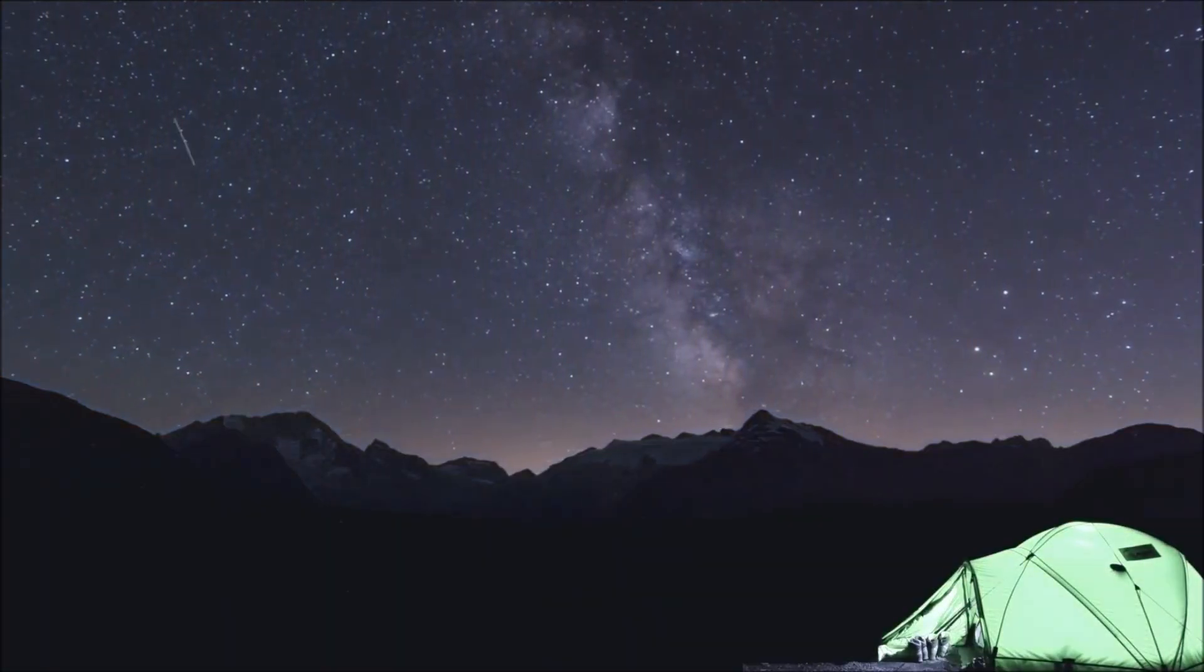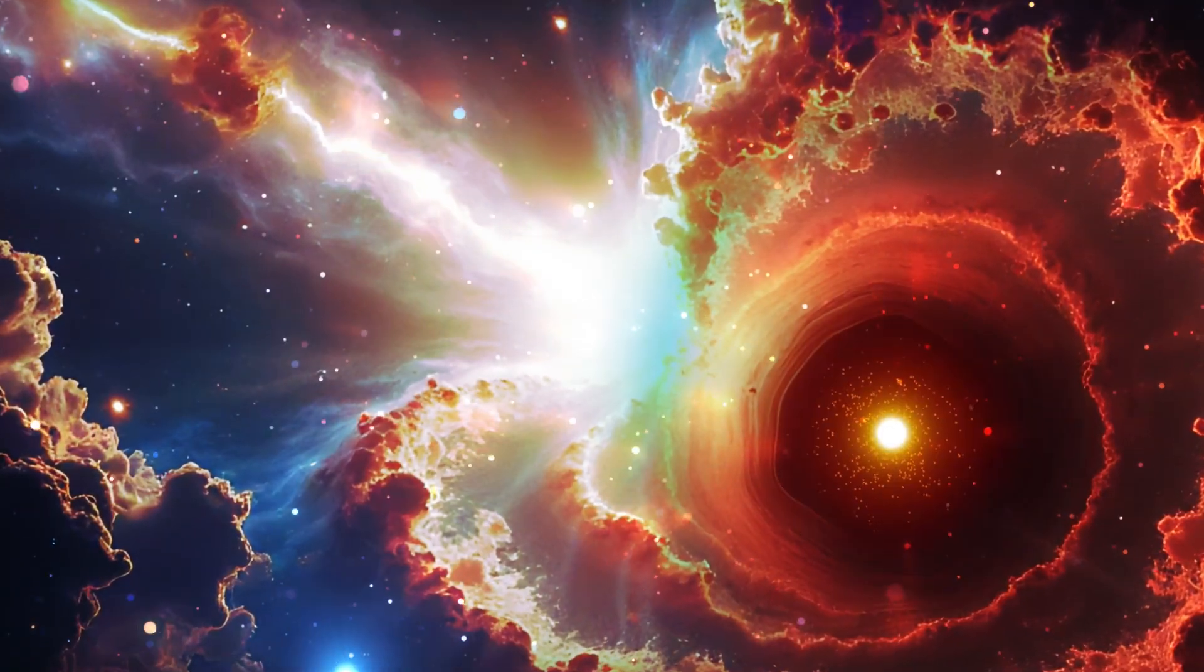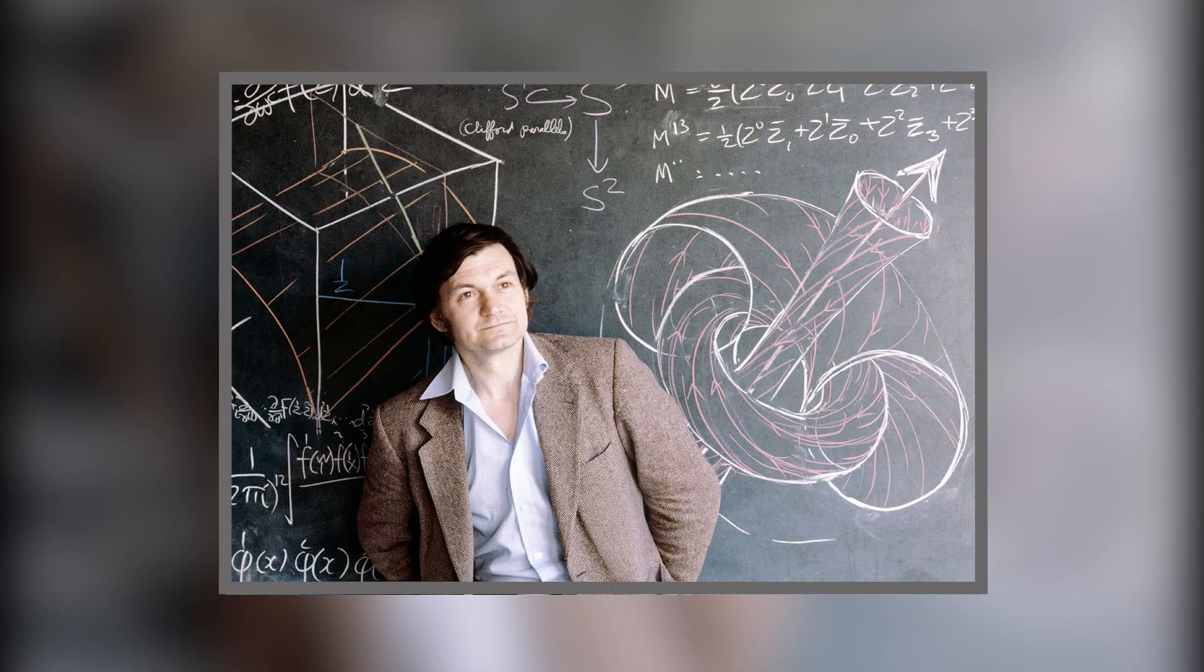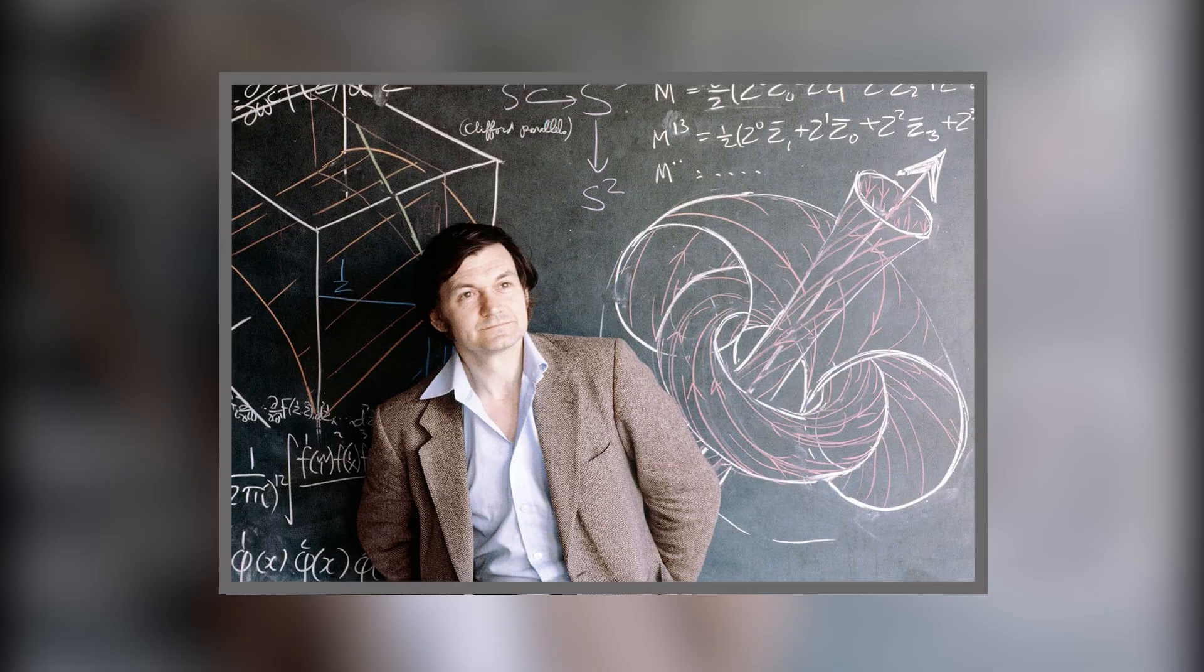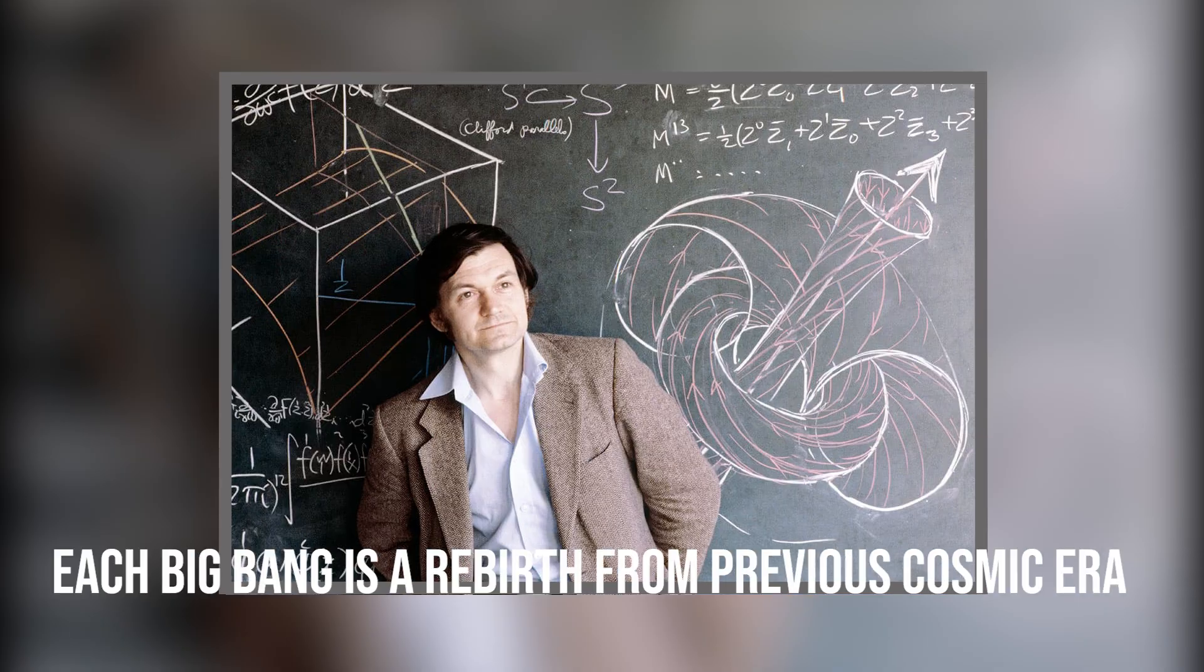This would explain why we can't see beyond our universe. The edge might literally be a black hole's event horizon. And this idea isn't fringe anymore. Nobel Prize winner Roger Penrose's Conformal Cyclic Cosmology says the universe goes through endless cycles. Each Big Bang is just a rebirth from a previous cosmic era.